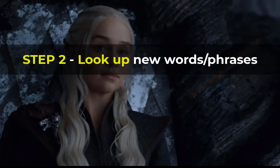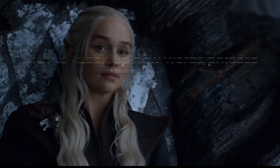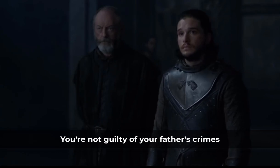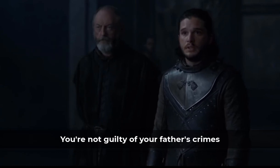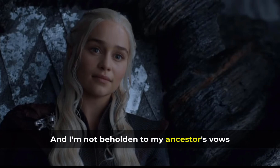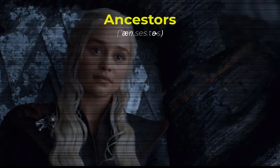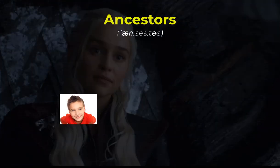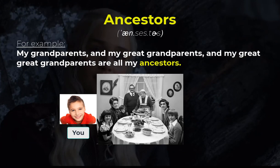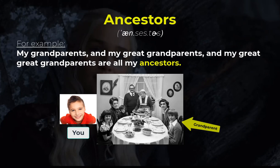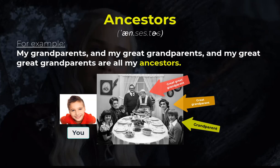Now it's time to analyse what we just watched. 'You're not guilty of your father's crimes and I'm not beholden to my ancestors' vows.' Ancestors — an ancestor is someone who was born before you and is related to you. For example: my grandparents, my great-grandparents, and my great-great-grandparents are all my ancestors. This is a great word to add to your vocabulary, so make sure to practice this one.